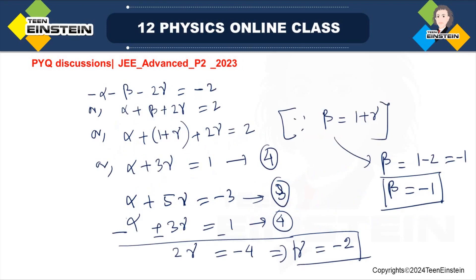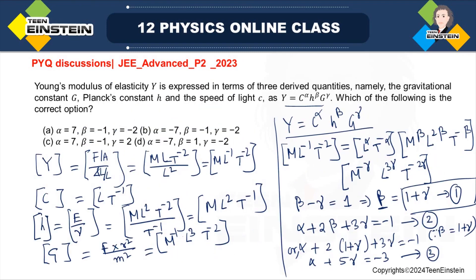Let me compare with the given options. The first option: alpha equals plus 7, beta equals minus 1, and gamma equals minus 2. This is actually the correct answer for this question. Thank you.